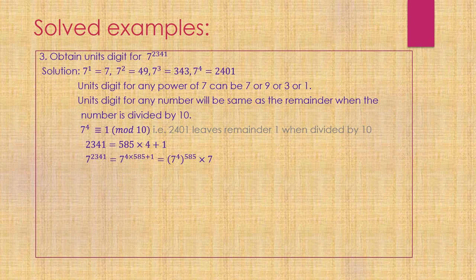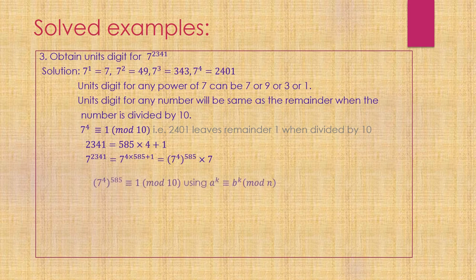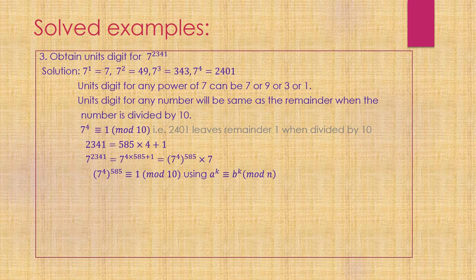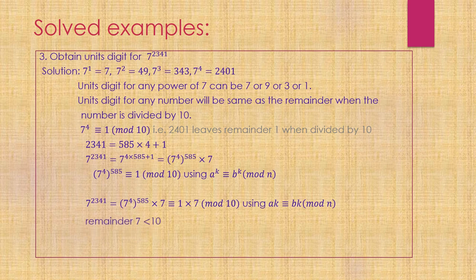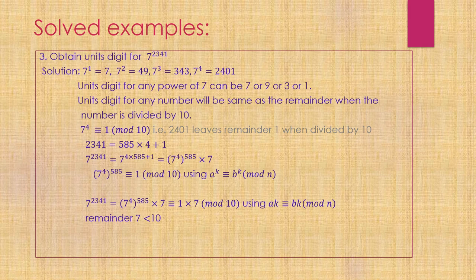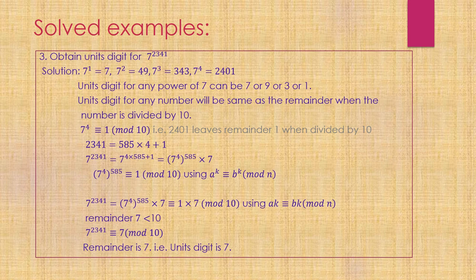Multiplying both sides by 7, I get 7^2341 is congruent to 7 modulo 10, with remainder 7, which is less than 10. Thus, the units digit is 7.